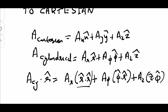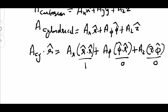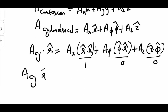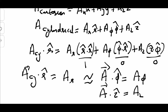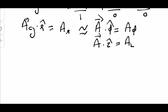We can see that r̂ · r̂ must equal one, φ̂ · r̂ must equal zero, and ẑ · r̂ equals zero, because they are 90-degree axes. So A · r̂ equals Ar, A · φ̂ equals A-phi, and A · ẑ equals Az — which is apparent from the equation.